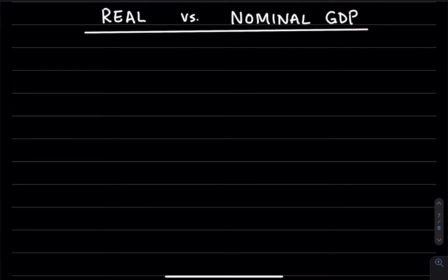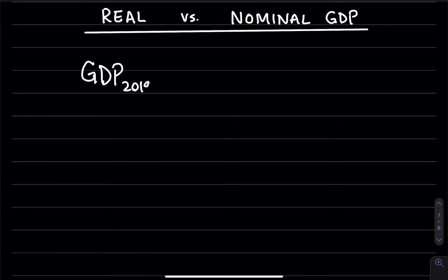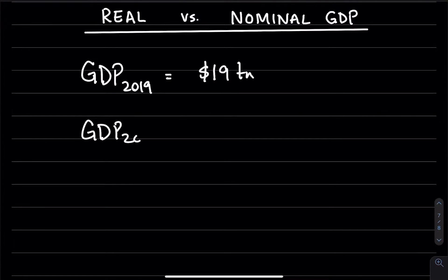In this video, we'll briefly introduce what we mean by nominal and real GDP. So far we've seen that GDP measures the total spending on goods and services in all markets in the economy. But think about the following: if GDP in 2019 was $19 trillion and GDP in 2020 is $20 trillion,